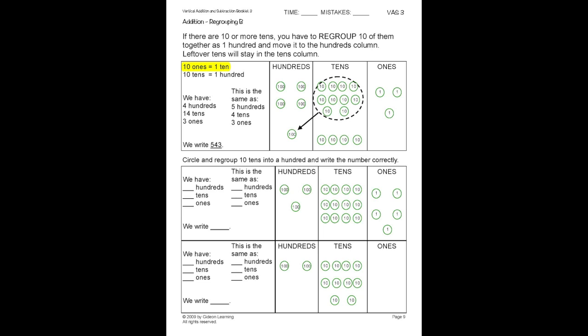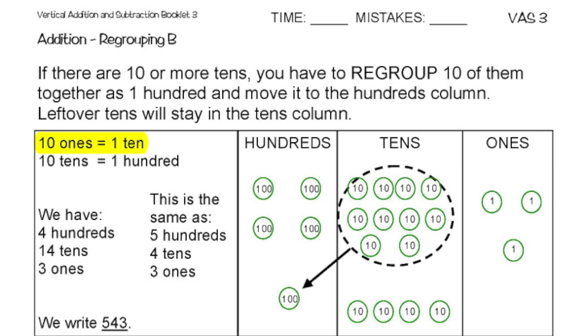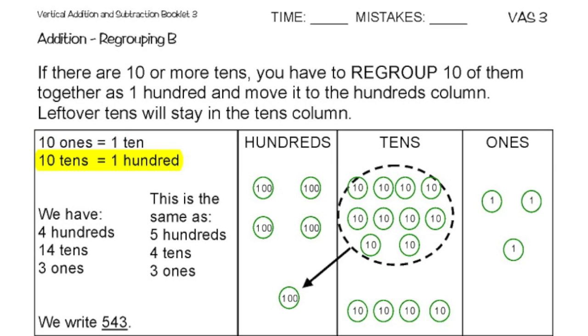On page 9, this is the same concept from earlier — we're just adding one more step. If there are 10 or more tens, you have to regroup 10 of them together as 100 and move it into the hundreds column. Leftover tens stay in the tens column. Just like 10 ones become 1 ten, now 10 tens become 1 hundred. So if we have 400s, 14 tens, and 3 ones, we circle 10 tens and put another 100 in the hundreds column. Now I have 500s, 4 leftover tens, and 3 ones — that never changed. So the answer is 543.